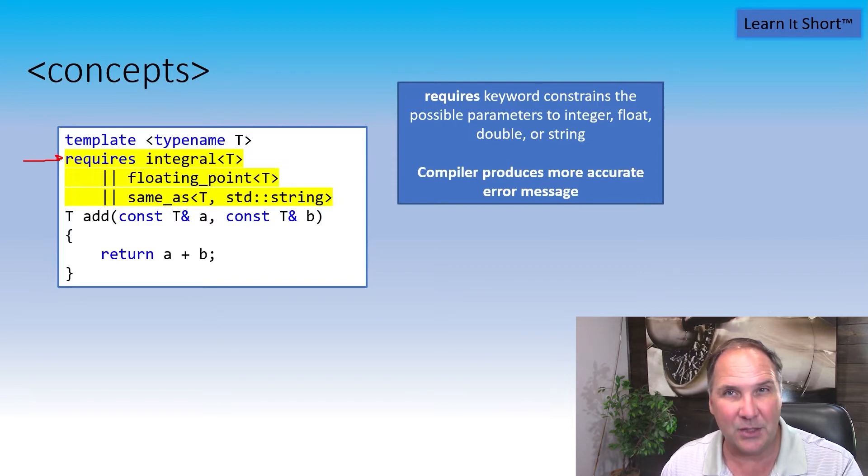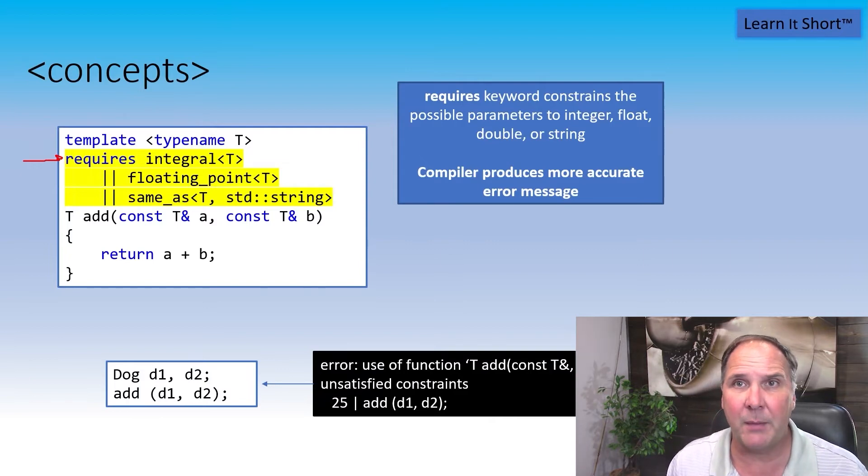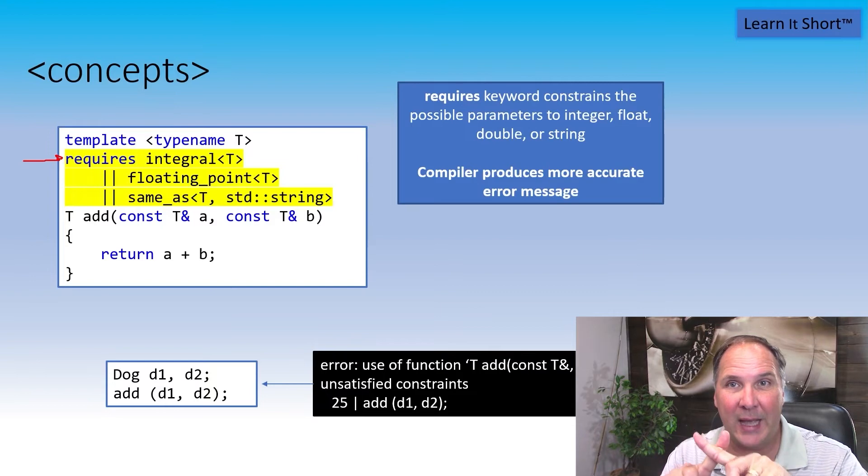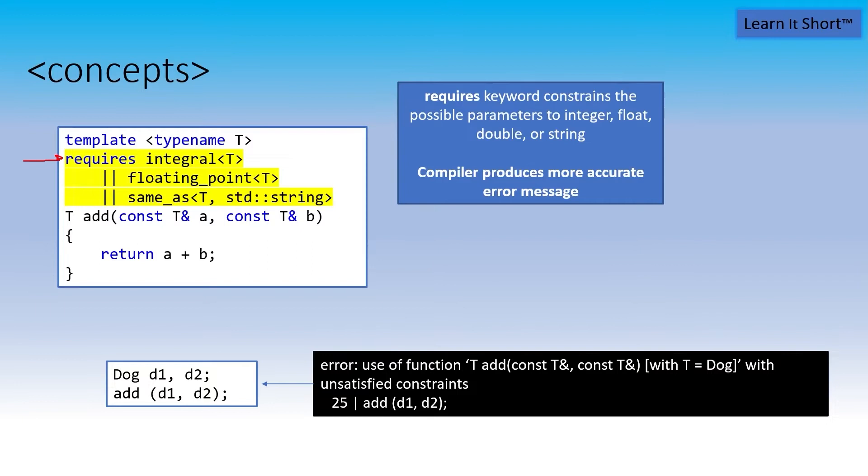Now, it doesn't change anything really. It just gives the compiler information on what's supposed to be passed in and produces a different error message. For instance, if I pass in two dogs to this function and dogs can't be added, they don't define an operator plus, then I get a different error message. Notice this error message isn't pointing to the template code. It's indicating where I'm trying to pass dogs into the add method. That's where the error really is.